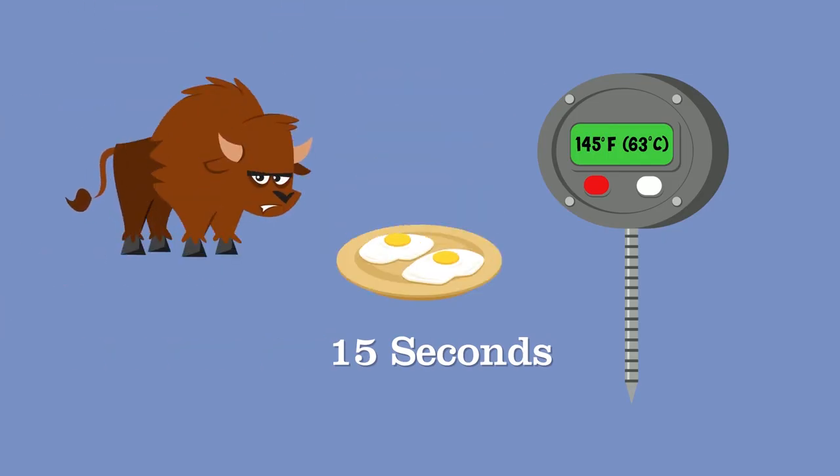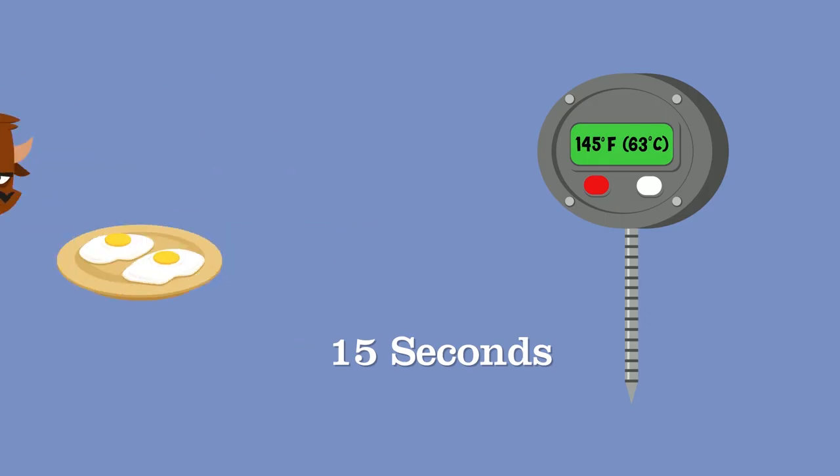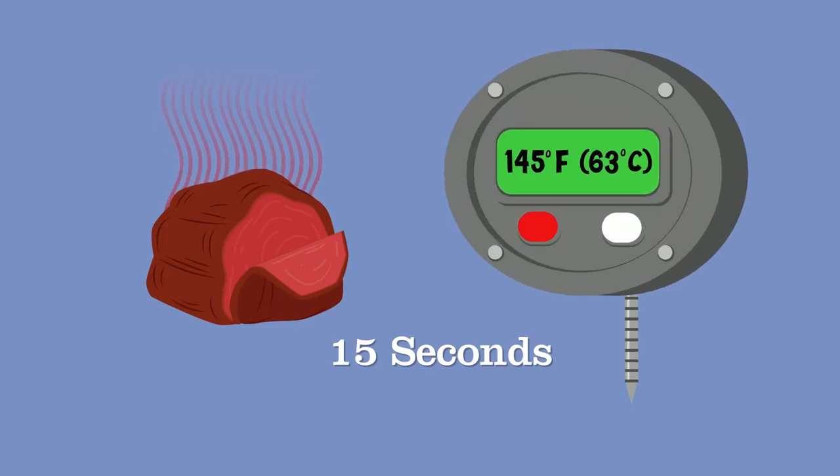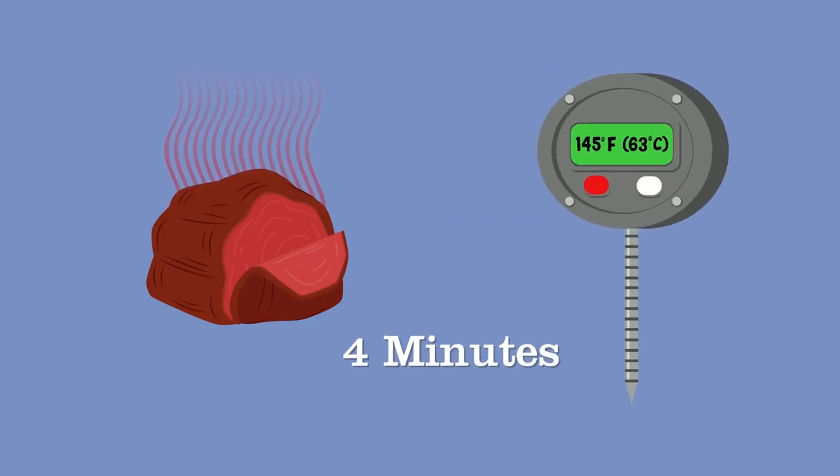Now, if you are cooking pork, beef, veal, or lamb roasts, they should be held at 145 degrees Fahrenheit (63 degrees Celsius) for quite a bit longer: four minutes. And there are also alternate cooking times and temperatures for roasts. Basically, as the internal cooking temperature of the roast goes down, the amount of time required goes up.